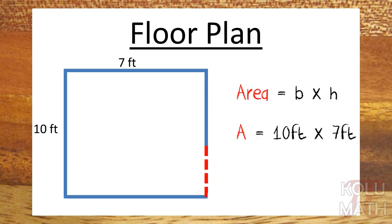Area is base times height, so that's 10 feet times 7 feet, and that gives us 70 feet squared.